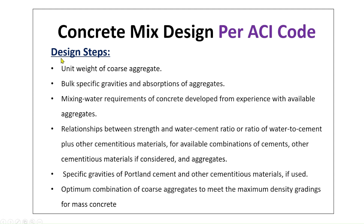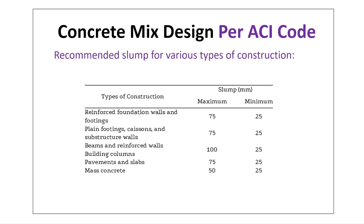Some background data needed before the design steps: unit weight of coarse aggregate; bulk densities, specific gravities, and absorptions for aggregate; mixing water requirements developed from experience with available aggregates; relationships between strength and water-cement ratio for available combinations of cements and aggregates; specific gravities for Portland cement and other cementitious materials; and optimum combination of coarse aggregate for maximum density. Also needed: the recommended slump table for various types of construction, used in the first step to determine slump.